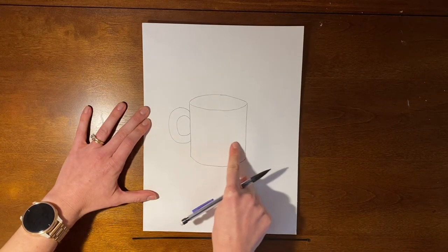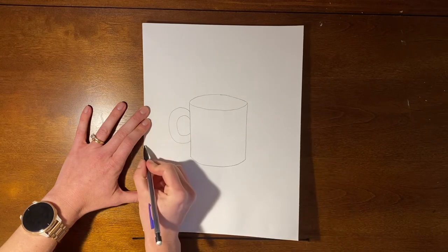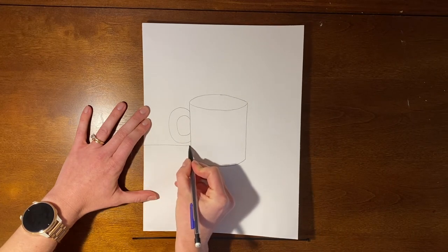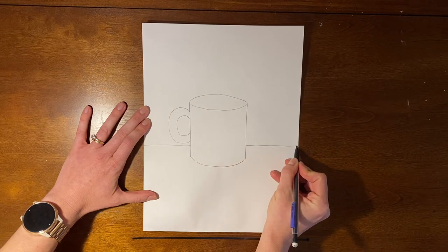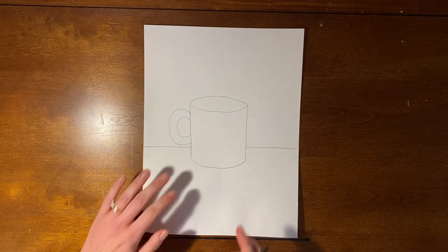Now, we can't leave our mug floating in midair, so let's draw a table for the mug to sit on. This is just a horizontal line, that just means straight across, that goes behind your mug.